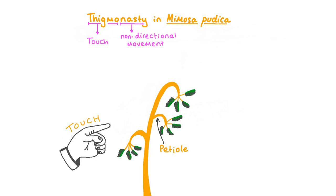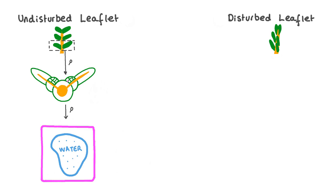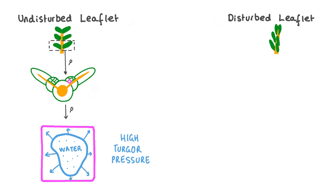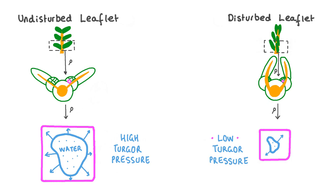Let's take a look at how mimosa plants can close these leaflets so rapidly. This diagram shows a simplified and magnified view of one part of a leaflet. By magnifying our view of one of the cells, we can see that it contains water inside a structure called a vacuole. Turgor pressure is the pressure exerted by water on the walls of the cells in the base of the leaflets. A lot of water means high turgor pressure, making cells turgid and helping them retain their shape. When the plant is touched, a signal causes these cells to lose water, developing low turgor pressure, which causes the leaflets to close.